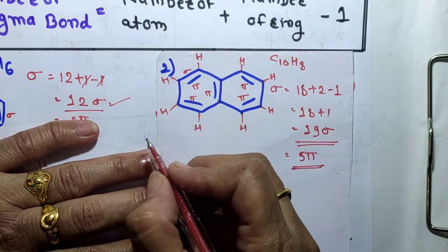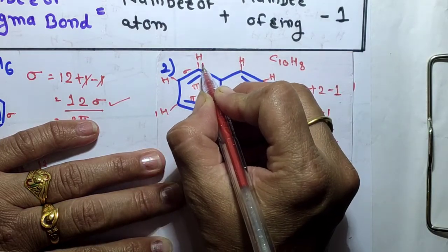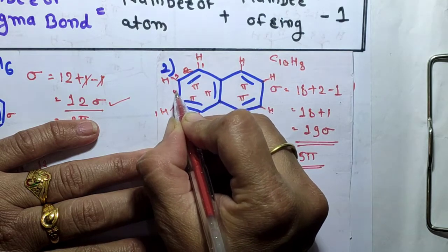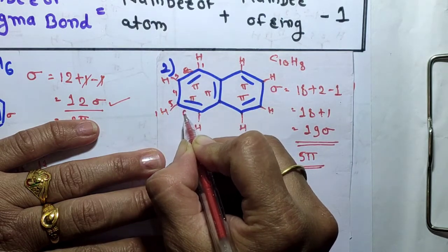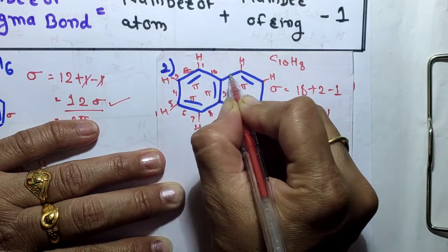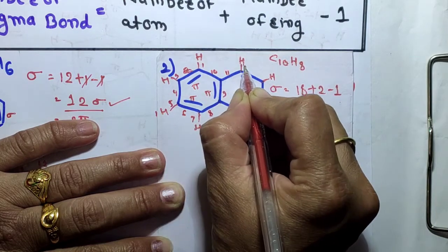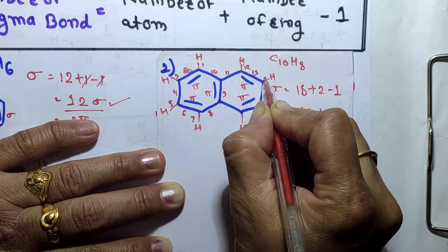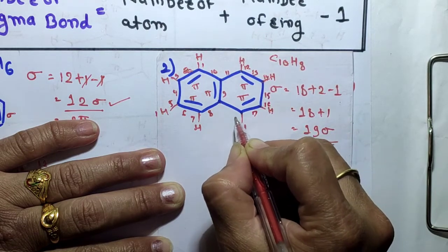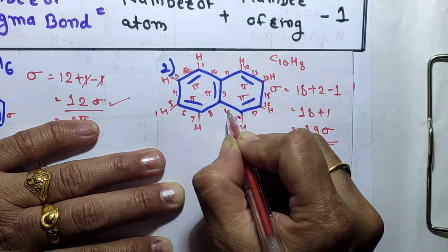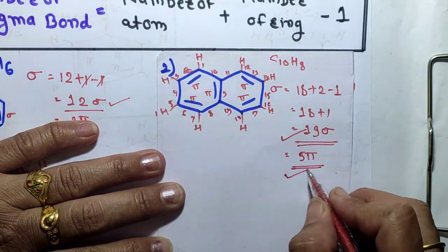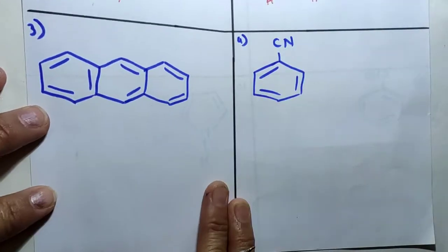We can verify by counting sigma bonds in the structure: 1, 2, 3, 4, 5, 6, 7, 8, 9, 10, 11, 12, 13, 14, 15, 16, 17, 18, and 19. That is 19 sigma bonds and 5 pi bonds in naphthalene.